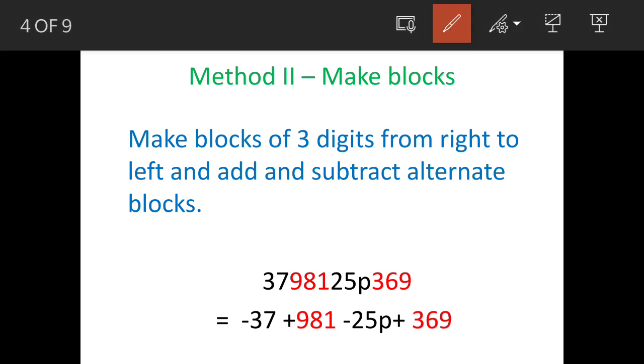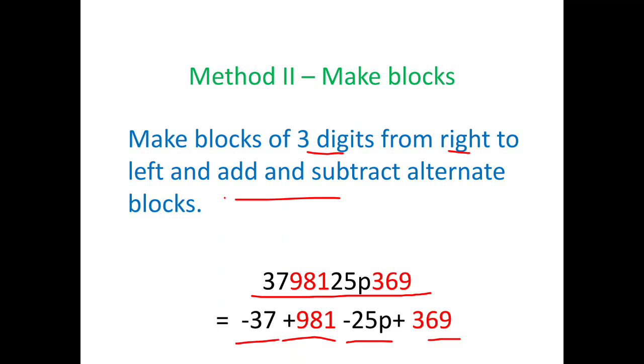In this method, we make blocks of three digits from right to left and add and subtract alternate blocks. So this becomes 369, this is plus 25p minus 981 plus 37 minus. This is how the number will be written.